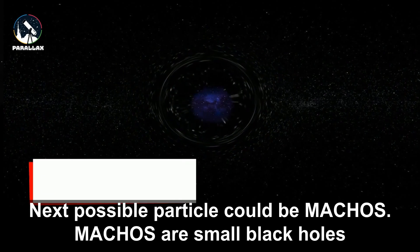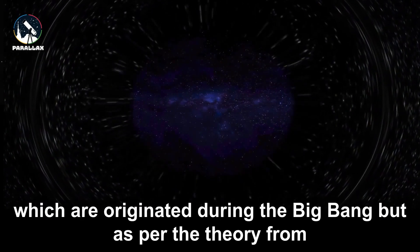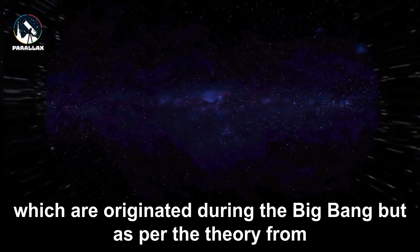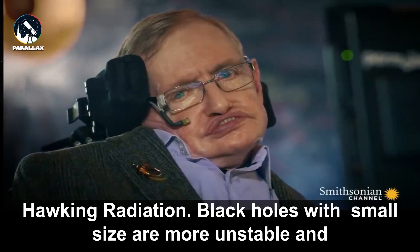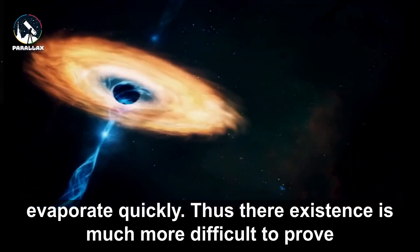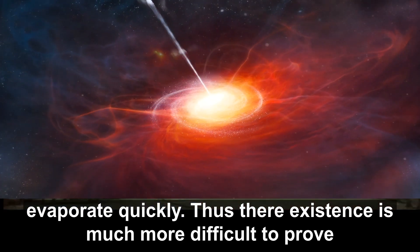The next possible particle could be MACHOs. MACHOs are small black holes which originated during the Big Bang. But as per the theory of Hawking Radiation, black holes with small size are more unstable and evaporate quickly. Thus, their existence is much more difficult to prove.